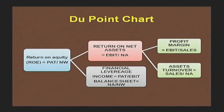When we multiply profit margin and asset turnover, we can see that sales cancel out — one is on the numerator side and another on the denominator side. So we get the formula: EBIT / Net Assets, that is our return on net assets. Return on net assets is nothing but the multiplication of profit margin and asset turnover.